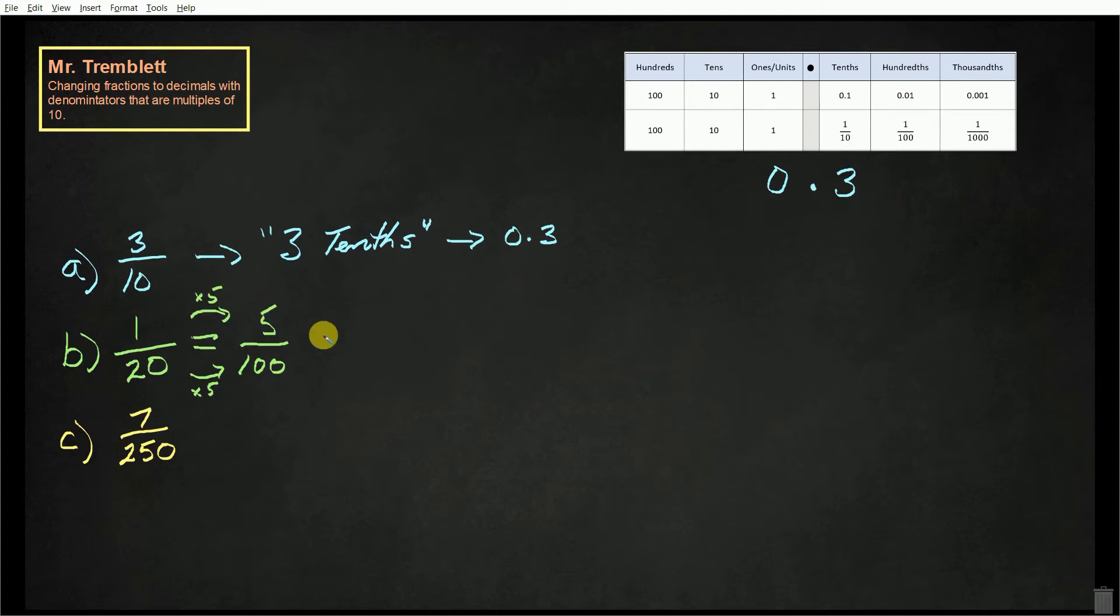Now, if I read 5 hundredths, we have a hundredths place value. So all I have to do is look at my place value chart. My decimal's here. I don't have any tenths, but I have 5 hundredths.